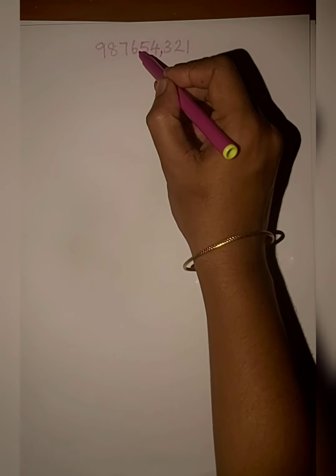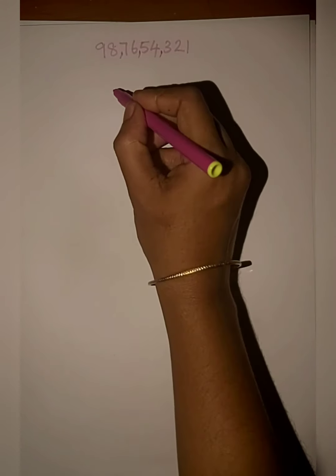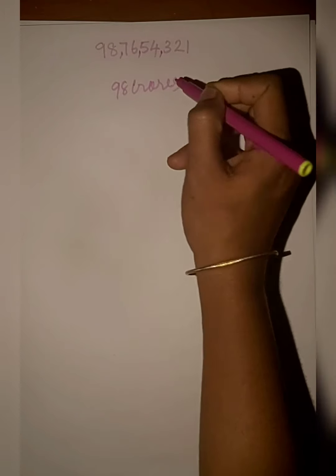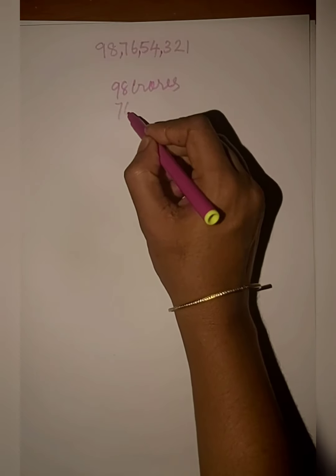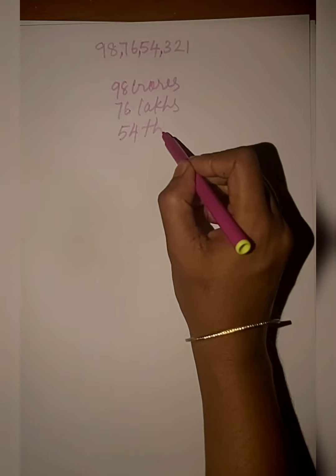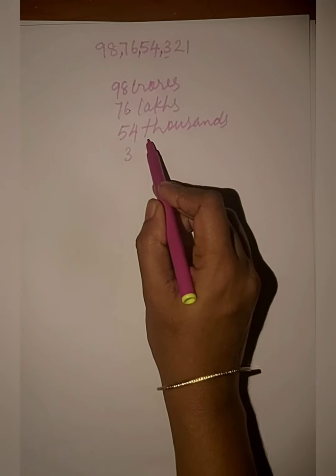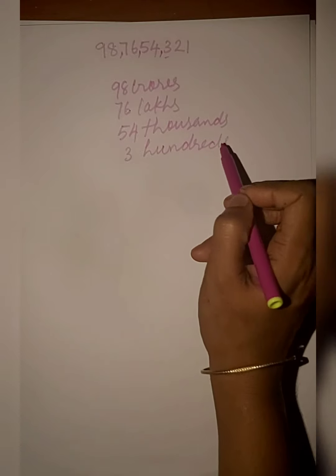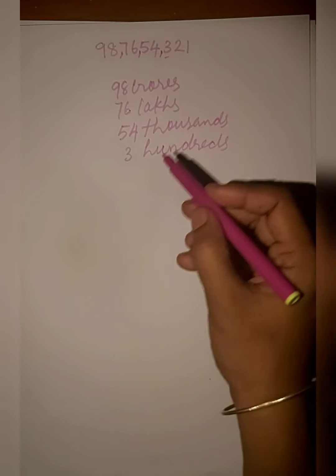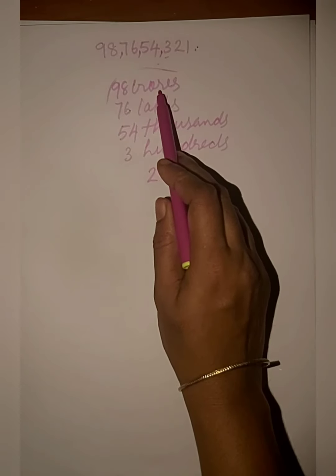Here is another example with a very large number. We place the first comma, the second comma after two digits, and the third comma after two more digits. How many crores? Ninety-eight crores. How many lakhs? Seventy-six lakhs. How many thousands? Fifty-four thousand. How many hundreds? Three hundred. Tens and ones: twenty-one. The number name is: ninety-eight crore seventy-six lakh fifty-four thousand three hundred twenty-one.